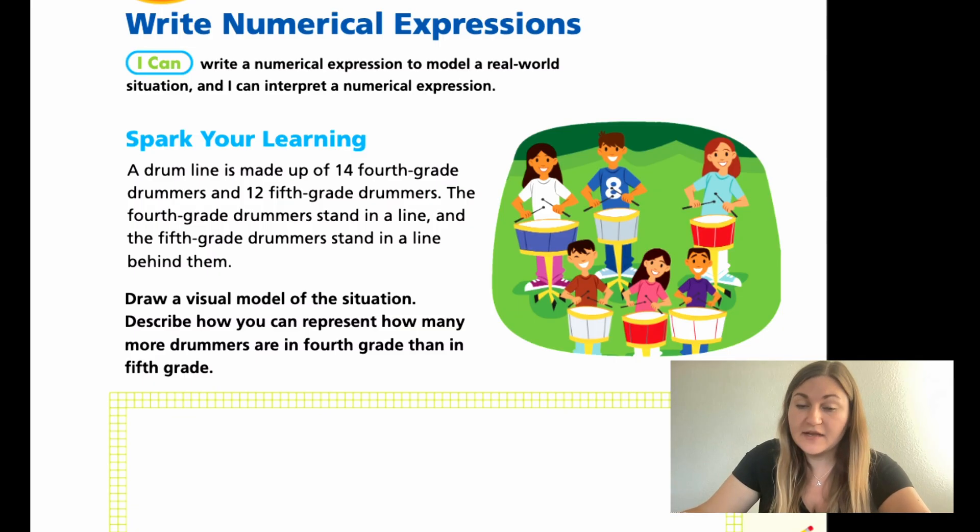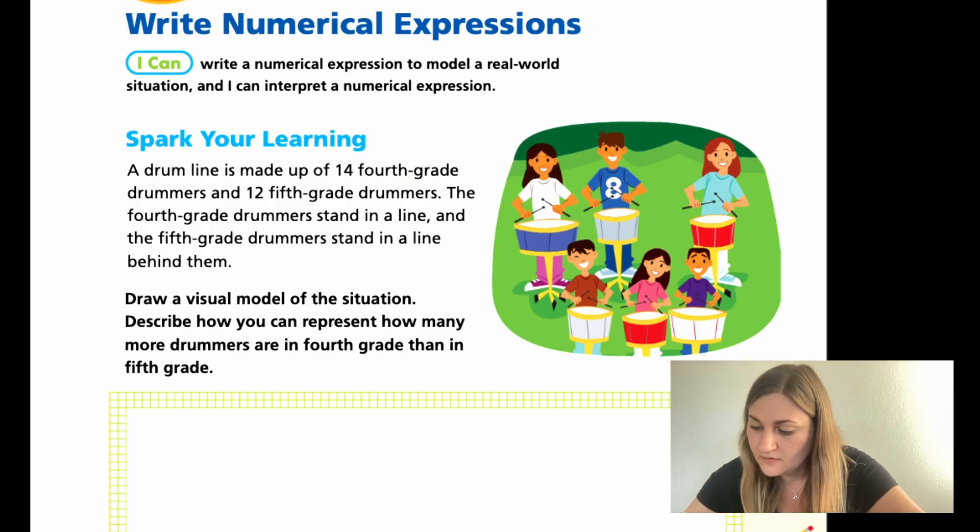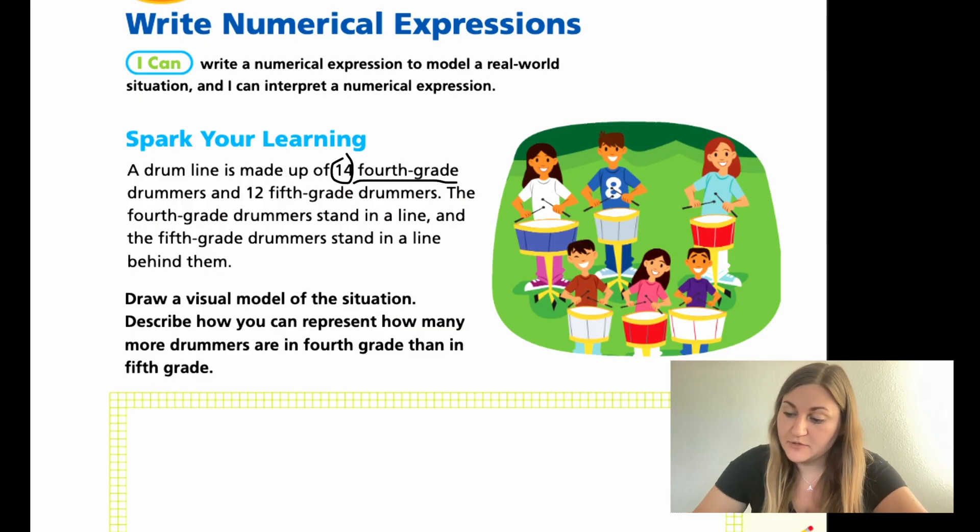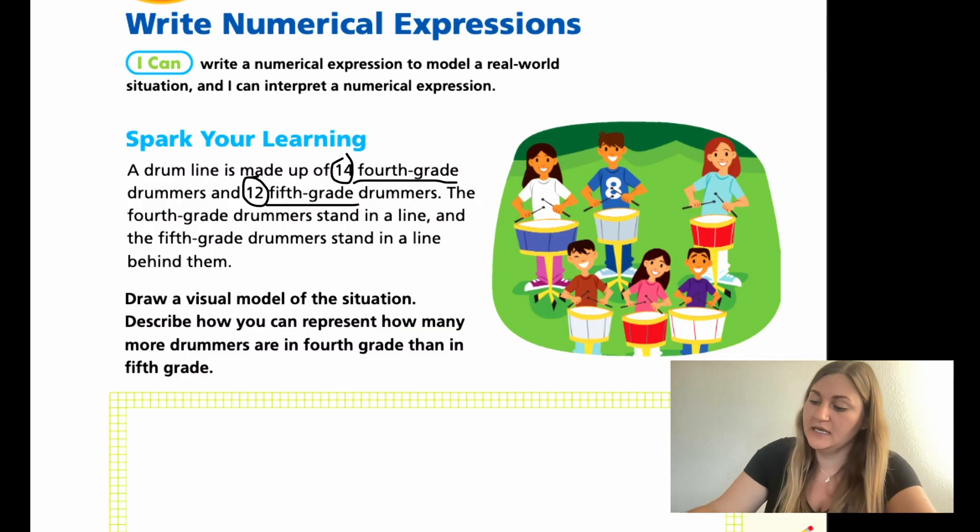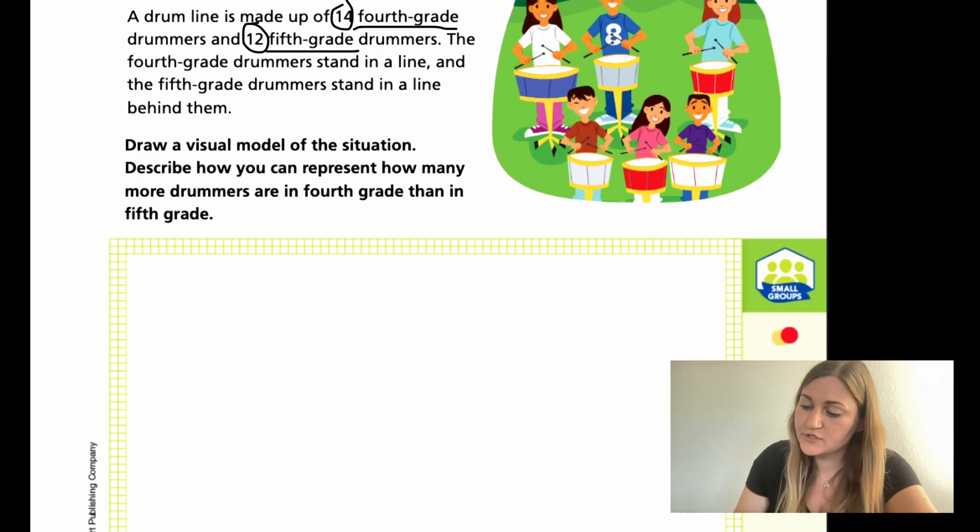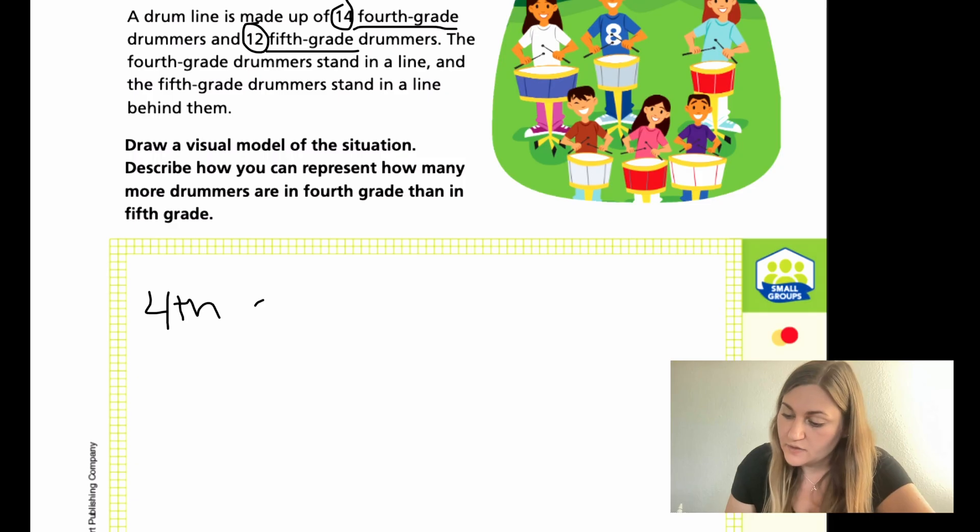So, I know that I need to read it again and pick out my numbers. A drum line is made up of 14 4th grade drummers and 12 5th grade drummers. So, I have 14 4th graders and 12 5th graders, and the 4th graders stand in a line, and then the 5th graders stand behind them. So, I'm just going to draw that out as if they were actually in a drum line. I'm going to start with my 4th graders here, and I'm going to draw 14 circles to stand for the students.